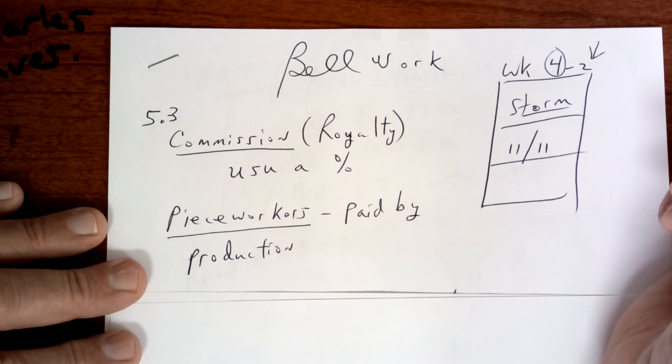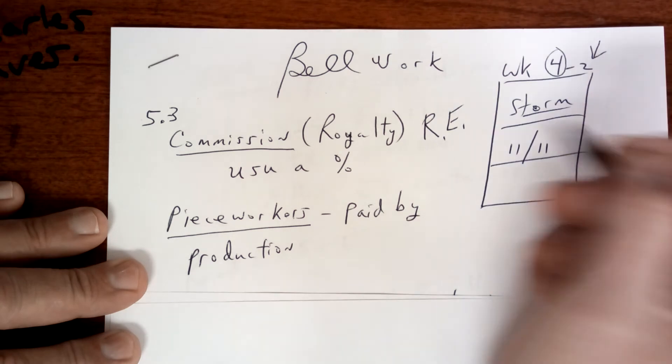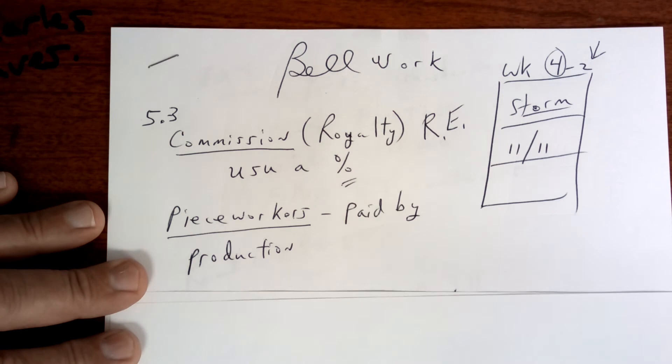Commission. It's usually a percentage of what you do, like a real estate agent. So a real estate agent is right there. As you know, I have my real estate license and if I did sell real estate, I would be paid a commission, a percentage of the sale price.